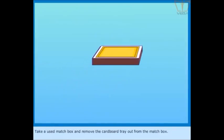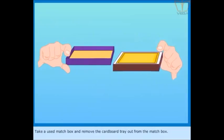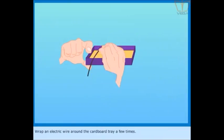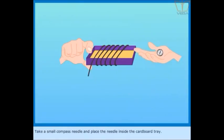Take a used matchbox and remove the cardboard tray from the matchbox. Wrap an electric wire around the cardboard tray a few times. Take a small compass needle and place the needle inside the cardboard tray.